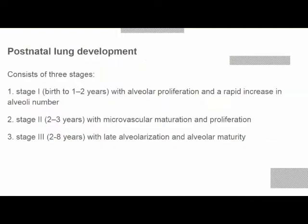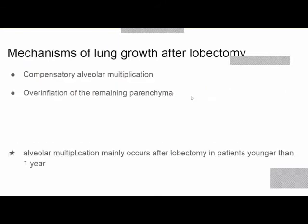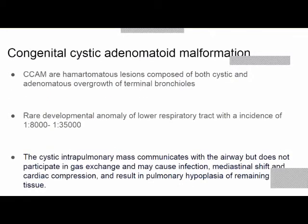Postnatal development — the alveolarization stage — consists of three stages: Stage one is birth to one to two years, with alveolar proliferation and rapid increase in alveolar number. Stage two is two to three years, with microvascular maturation and proliferation. Stage three is two to eight years, with late alveolarization and alveolar maturity. After lobectomy, lung growth occurs by compensatory alveolar multiplication or overinflation of remaining parenchyma. Alveolar multiplication mainly occurs after lobectomy in patients younger than one year.